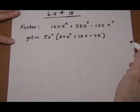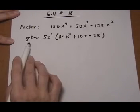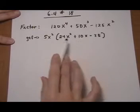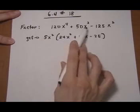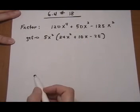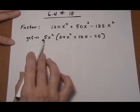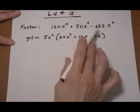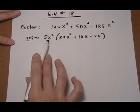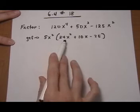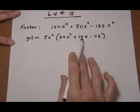So the first thing you want to do is look for the greatest common factor to try to make this a little bit nicer to use the trinomial factoring. So each of these, the 120, the 50, and the minus 125, have a factor of 5. So let's pull that out. They also each have an x squared, and that's the most we can pull out. So let's pull out the x squared, and we're left with 5x² times 24x² plus 10x minus 25.